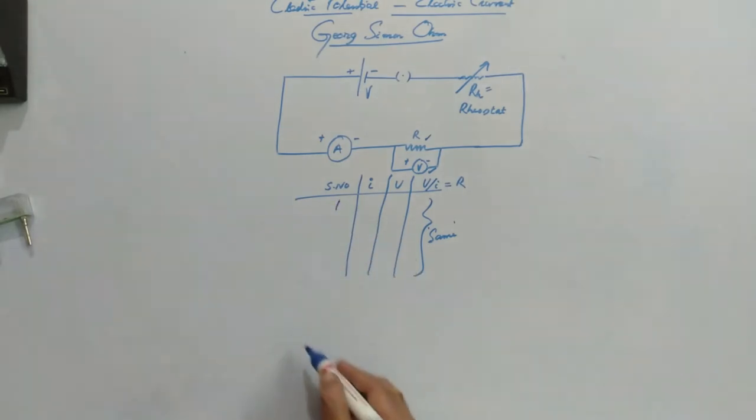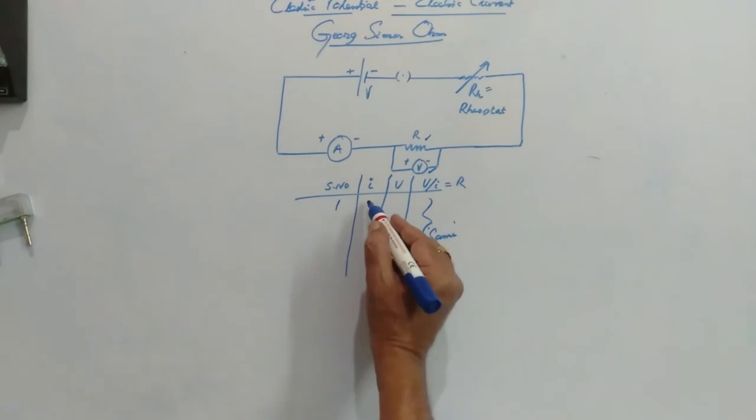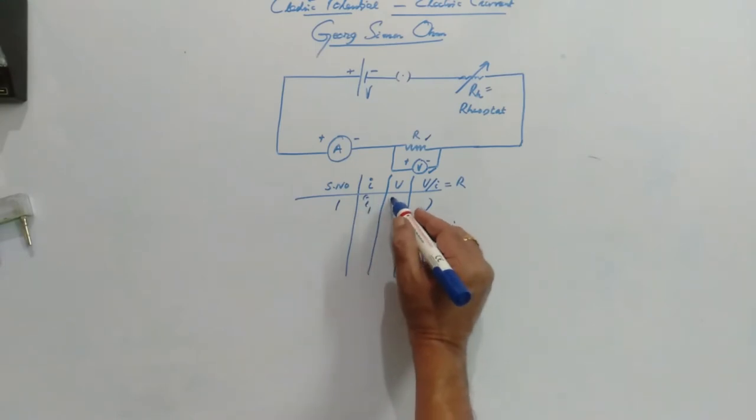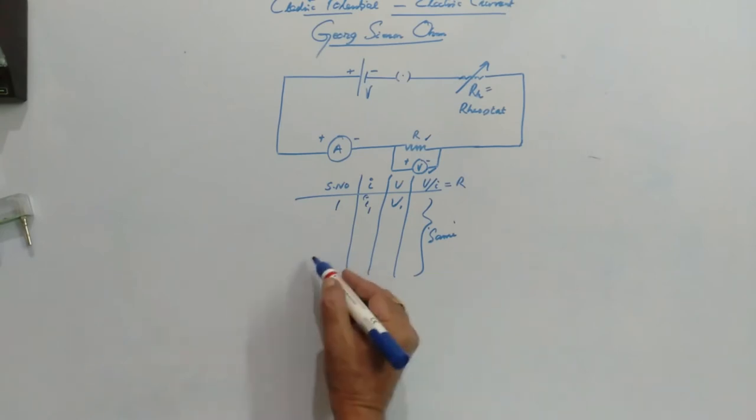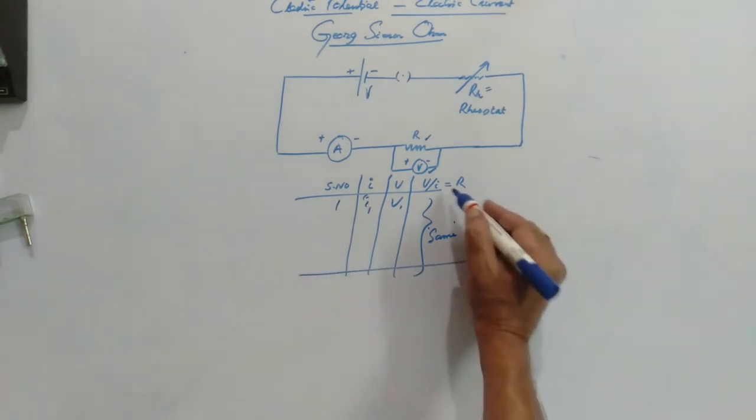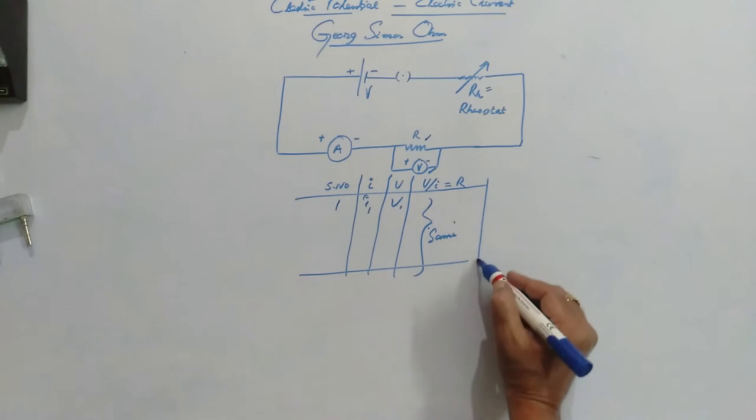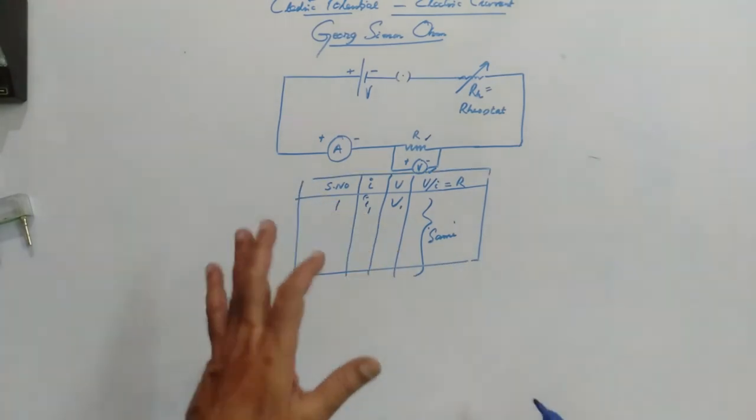So here, we will have to note down first what is the current, then that reading you have to take, and then what is the potential difference, and then V1 by I1. So like that, minimum some six readings are to be obtained. Let's do this activity.